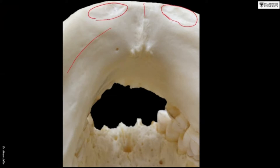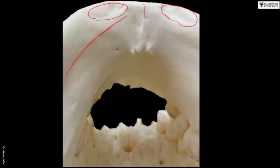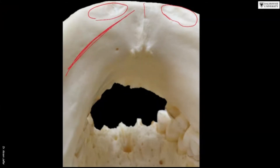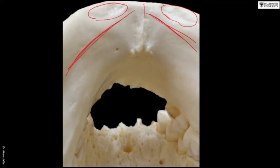You can also see this line, which is the mylohyoid line. The mylohyoid muscle is present here. When you studied the submental triangle, you saw the mylohyoid muscles. Inferior to mylohyoid is the anterior belly of digastric. Mylohyoid separates the neck below from the mouth above — this is the mylohyoid line.